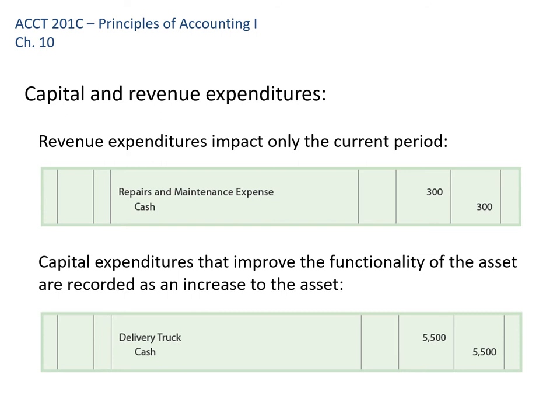For expenditures after we purchase the asset, they fall into two categories: capital expenditures and revenue expenditures. A revenue expenditure only benefits the current period — for example, giving a truck an oil change doesn't cause the truck to last longer than it should have. That's just an expense for this year, and usually a fairly small amount. Capital expenditures either improve the functionality of the asset — in which case we add it to the cost of the asset, raise the asset value, and credit cash or a liability. For example, putting a snow plow on a delivery truck gives it new functionality.